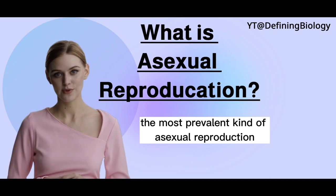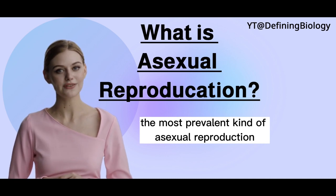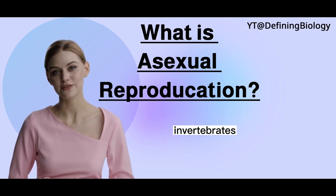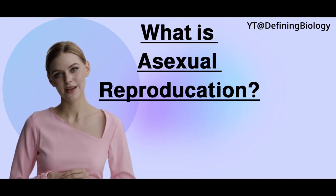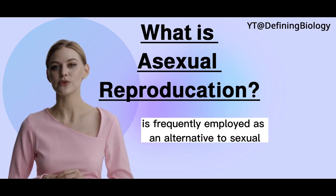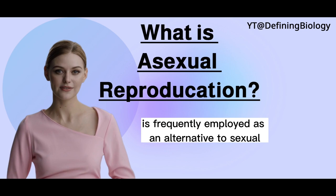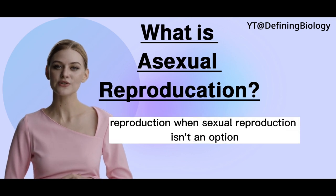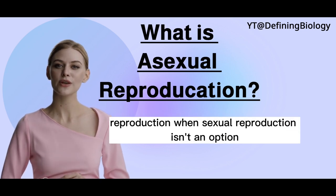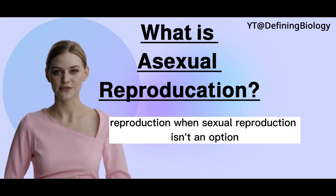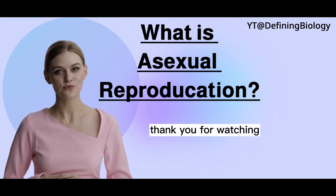Parthenogenesis, the most prevalent kind of asexual reproduction in vertebrates, is frequently employed as an alternative to sexual reproduction when sexual reproduction isn't an option.